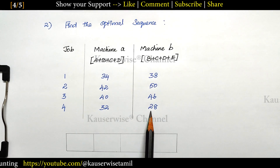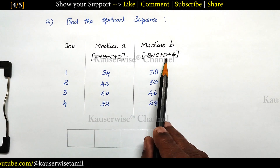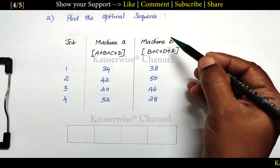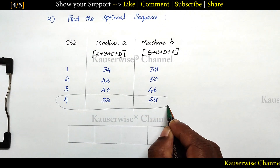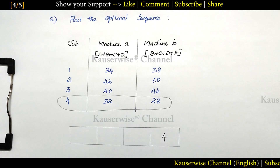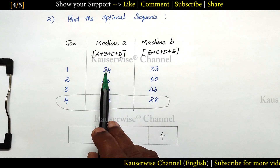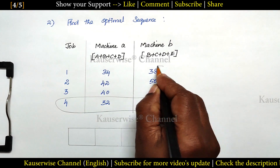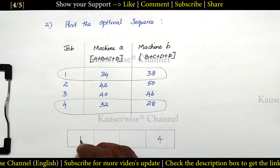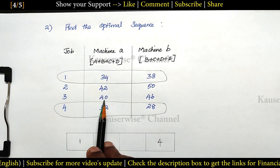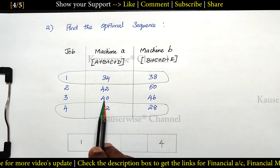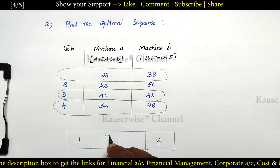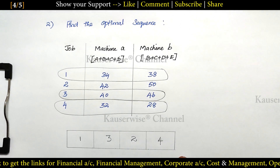The minimum duration is 28, occurring in machine B'. If the minimum duration occurs in machine B', we allocate that job in the backward direction first. So job 4 is assigned at the back. Next minimum duration is 34, occurring in machine A', so we assign job 1 in the forward direction. The next minimum duration is 40, also in machine A', so job 3 goes forward. The last one is job 2. So the optimum sequence is 1, 3, 2, 4.